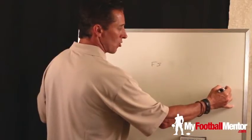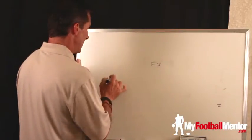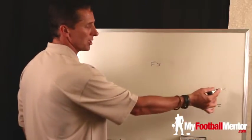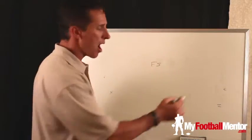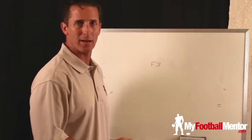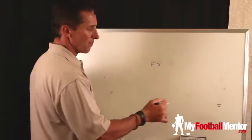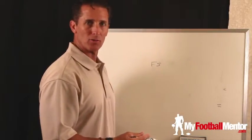Now let's look at the corners. In a cover three, the corner is usually going to be six or eight yards off and one yard outside of the receivers. That's an indicator that it's a cover three.